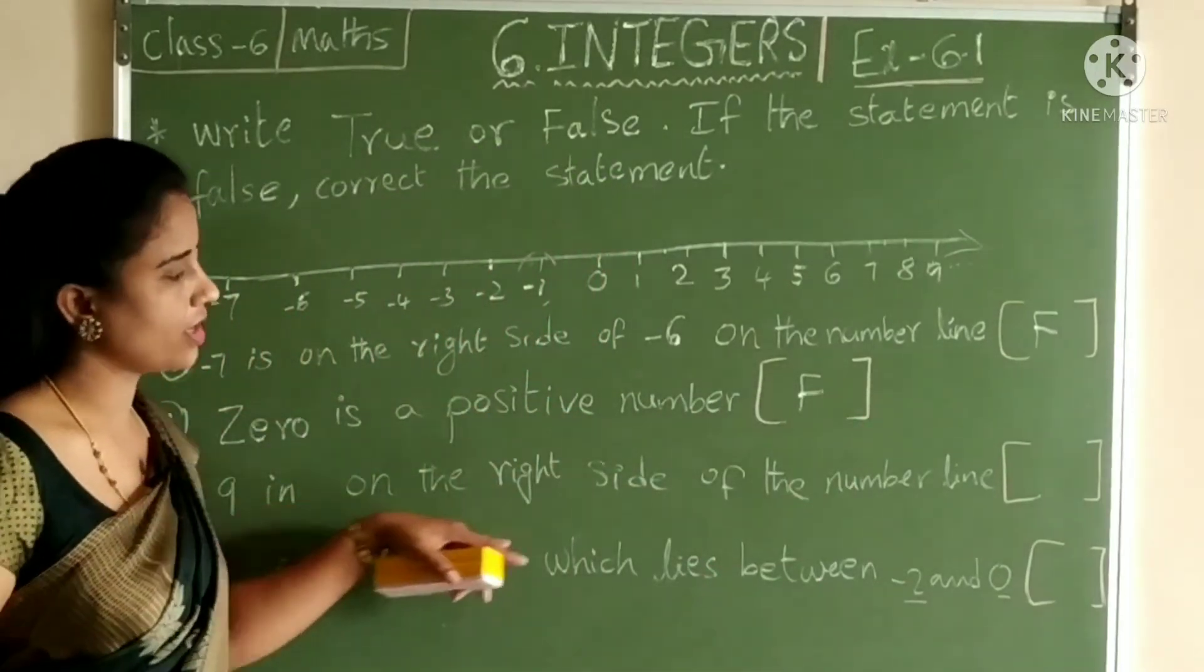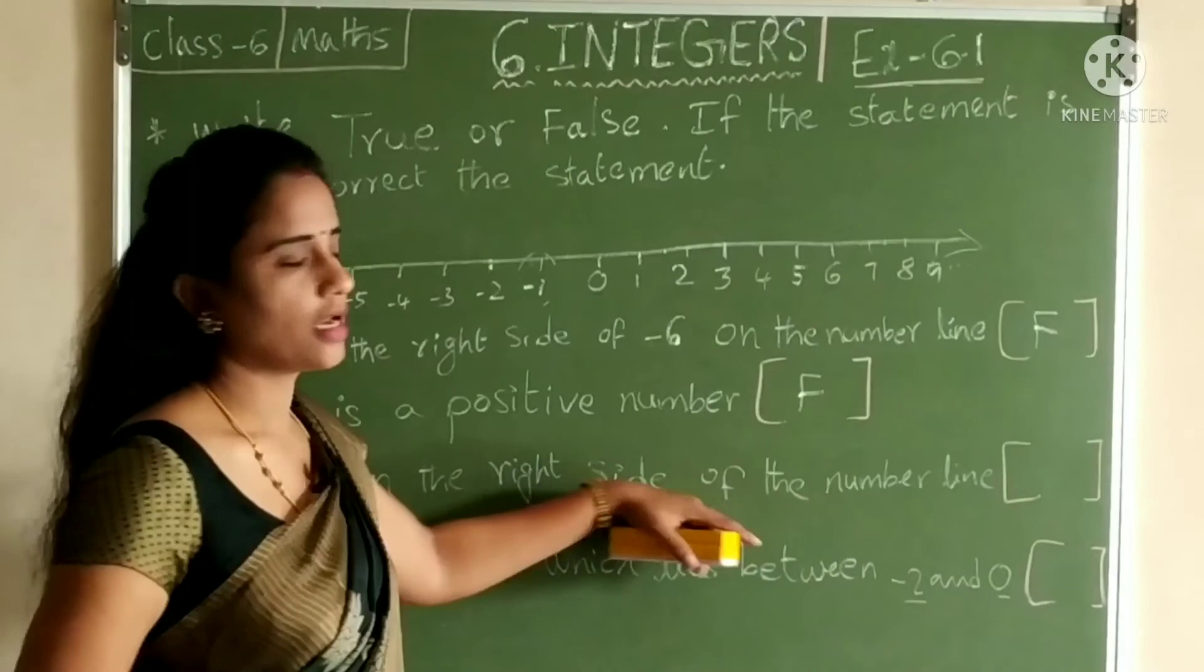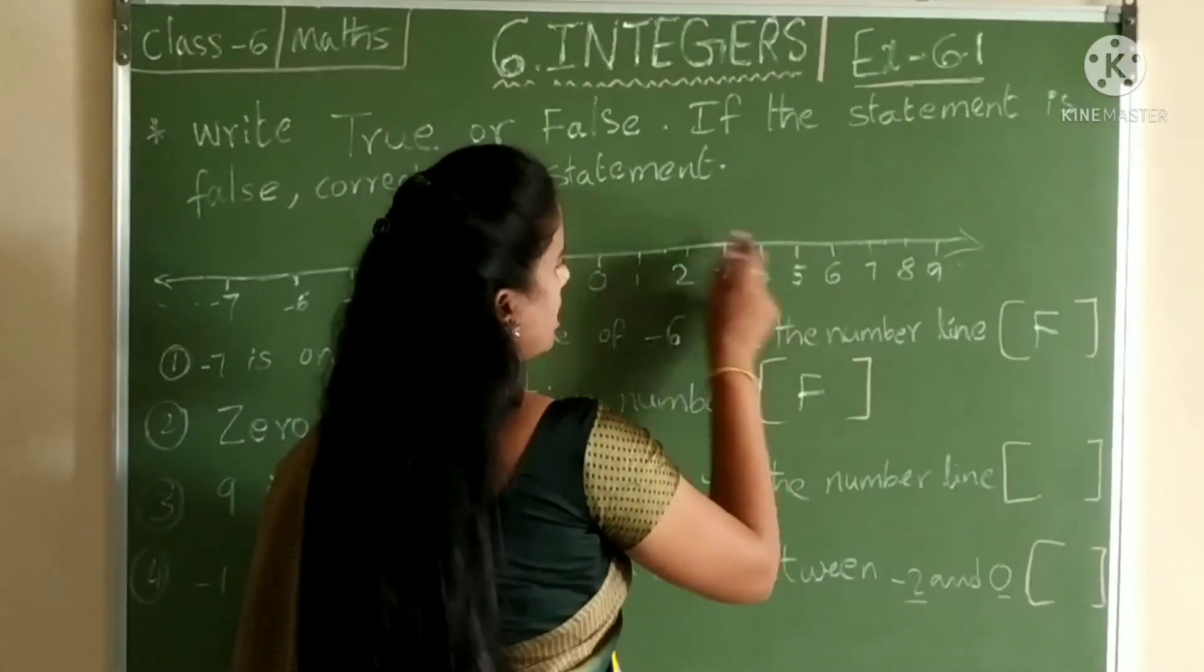9 is on the right side of the number line. 9 is on the right side of the number line. Yes, 9 is...